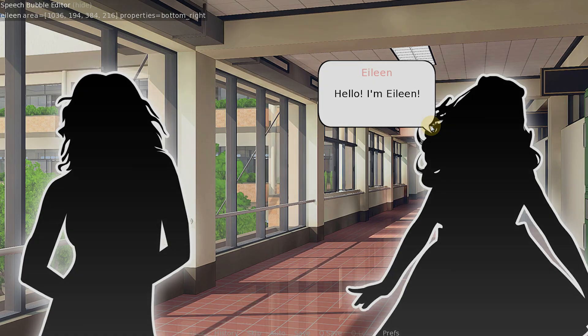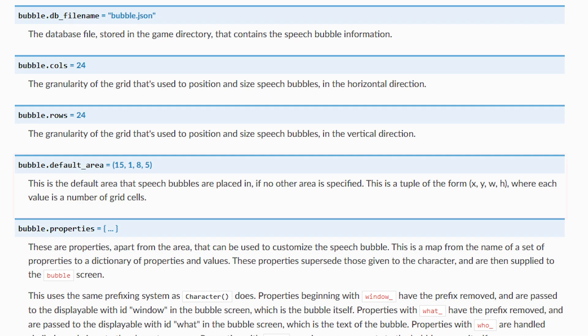Another configuration variable is called bubble.defaultarea, which you can tweak to make the default placement of a bubble to something different. This might be handy to use for some games where maybe you only have one character who speaks, and want their speech bubbles to be placed in the same location every time, and not have to use the bubble editor at all.